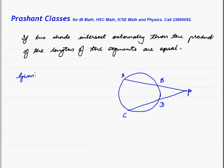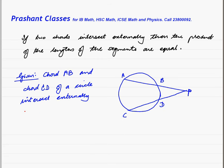Given: chord AB and chord CD of a circle intersect externally at point P. To prove that the product of their segments are equal. To prove that AP into BP is equal to CP into DP.